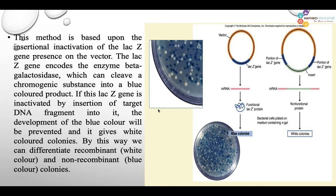Which gene's inactivation are we doing here? The lacZ gene, which is present on a vector. The lacZ gene encodes the enzyme beta-galactosidase. This enzyme is able to cleave a chromogenic substance into a blue-colored product.